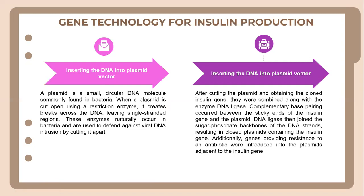The next process is inserting DNA into a plasmid vector. A plasmid is a very small circular DNA molecule commonly found in bacteria. When a plasmid is cut open using a restriction enzyme, it creates breaks across the DNA leaving single-stranded regions. These enzymes naturally occur in bacteria and are used to defend against viral DNA intrusion by cutting it apart. After cutting the plasmid and obtaining the cloned insulin gene, they were combined along with the enzyme DNA ligase; complementary base pairing occurs between the sticky ends of the insulin gene and the plasmid.